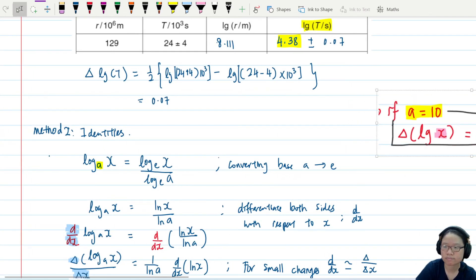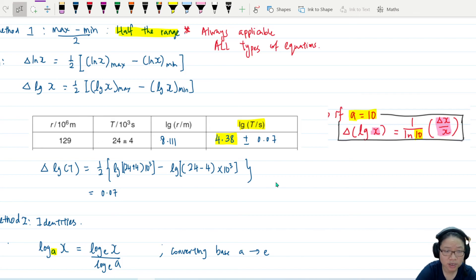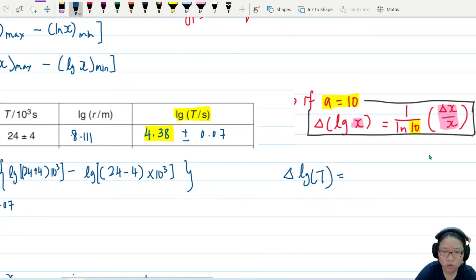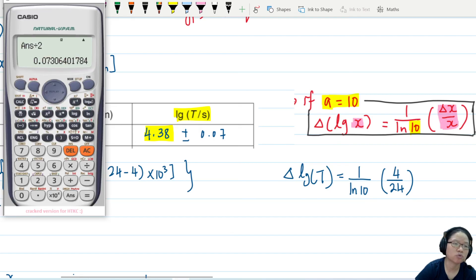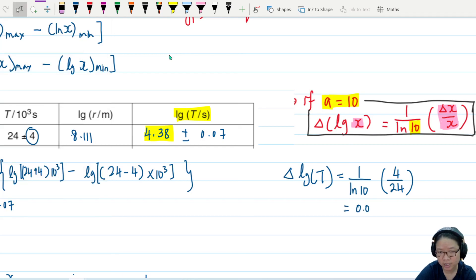We're going to try method 2 now. So instead of using half max min, what I can say is the uncertainty of log t, I'll zoom in a bit, will be equal to 1 over ln 10 bracket, the uncertainty, which is 4, so 4 over 24. And this is infinitely easier to press on my friend Casio, the calculator: 1 over ln 10, multiply by 4 over 24, 0.07. You round it to 1 SF, you will get the same, because this is uncertainty, so it should be 1 SF.